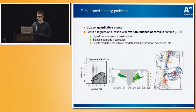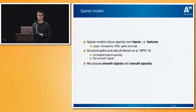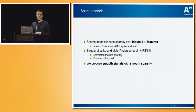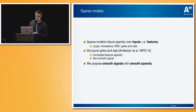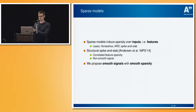But not much has been done in machine learning. This sounds like a perfect case to apply sparsity. We have lots of sparse methods — for example, lasso, horseshoe, ARD, spike and slab. But these are all methods that design sparsity over the input domain, so we have sparse features, not sparse outputs, which is what we actually want. There is an interesting approach called structural spike and slab, where the sparse regions are correlated, so similar locations are usually put to zero together.